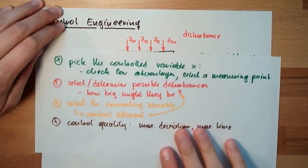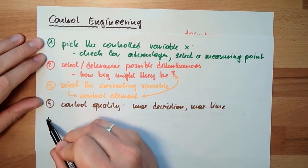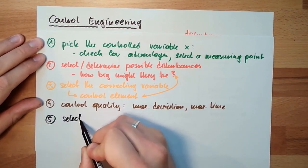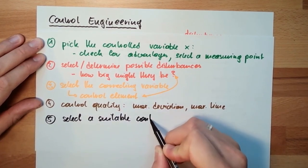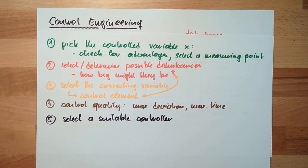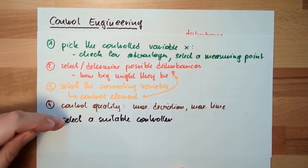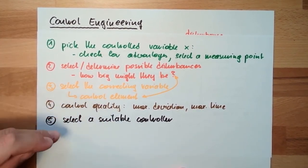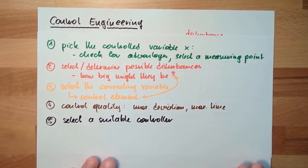Now everything is clear, so we can select the controller — that's our fifth step. We need to select a suitable controller, one which meets the required control quality, and with which we can drive the control element. In the next video we will see there are a lot of different types of controllers to choose from.